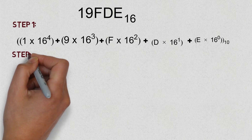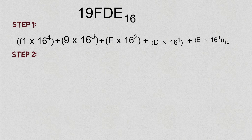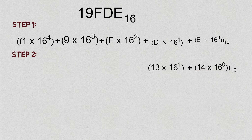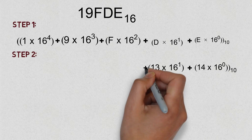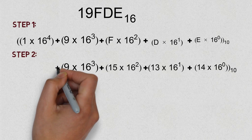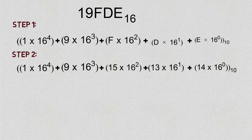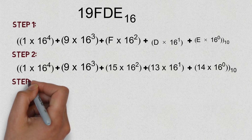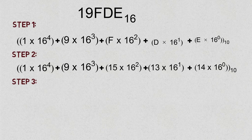Unlike the previous two examples, one additional step is needed here because we need to convert the letters A, B, C, D, E, F into their numeric values 10 to 15. In this number 19FDE, we have three alphabetical units: E is replaced by 14, D by 13, and F by 15. So the expression becomes: 1×16⁴ + 9×16³ + 15×16² + 13×16¹ + 14×16⁰, all in base 10.